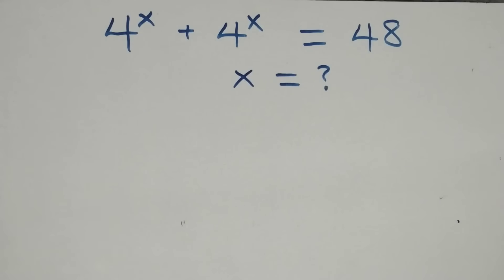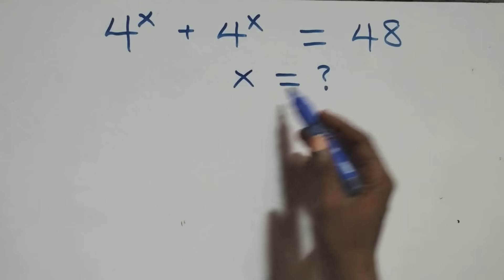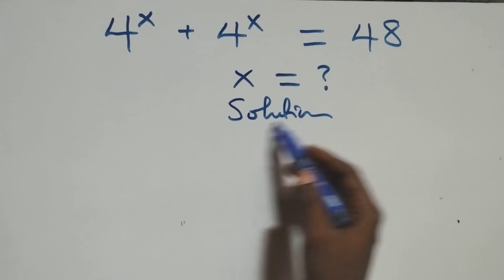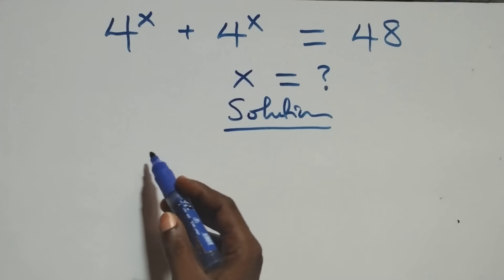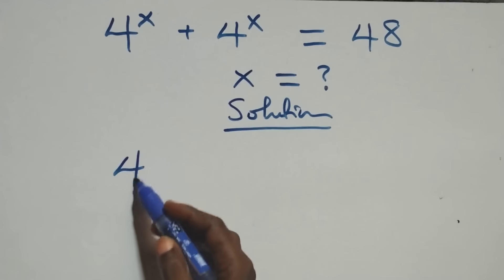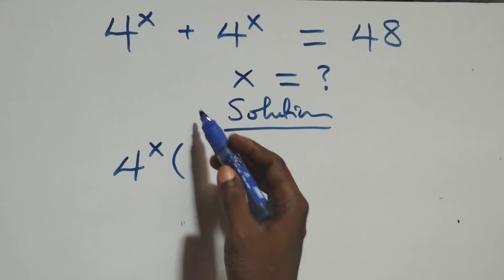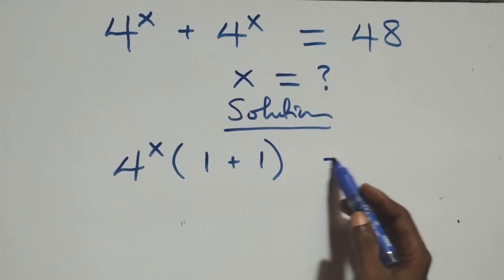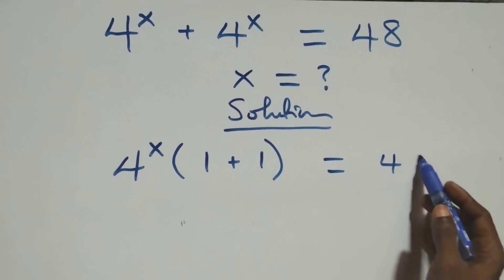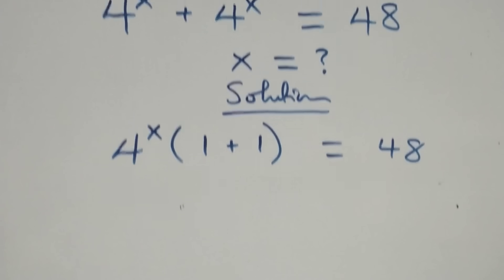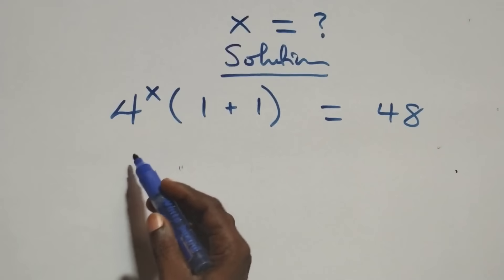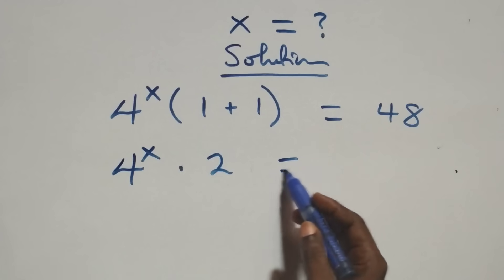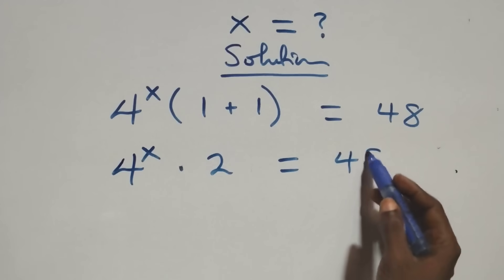Hello, you are welcome. How to solve this nice exponential equation. From here, we factor 4 raised to the power x out, that is we have 4 raised to the power x into bracket, 1 plus 1, left inside, then equals to 48. This becomes 4 raised to the power x times 2 equals to 48.